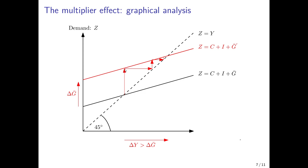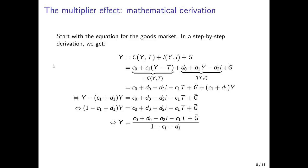This already follows from the graphical depiction: this arrow has the same length as the initial increase in governmental expenditures, but the increase in output is much higher. We can read off the increase in output, which is greater than the increase in governmental expenditures. So from a graphical perspective, we've seen why the multiplier effect emerges.